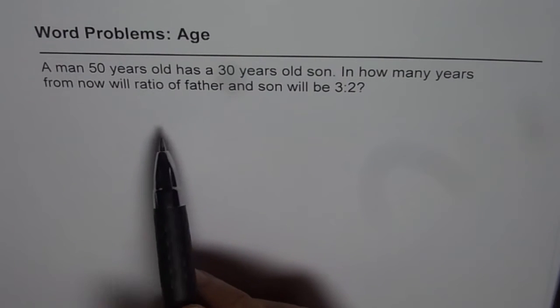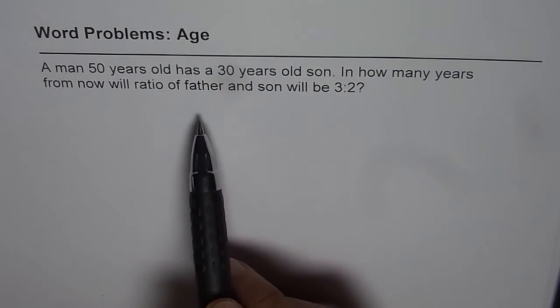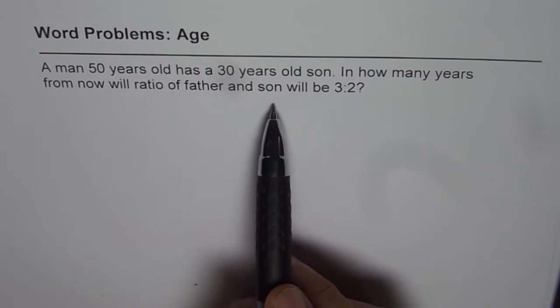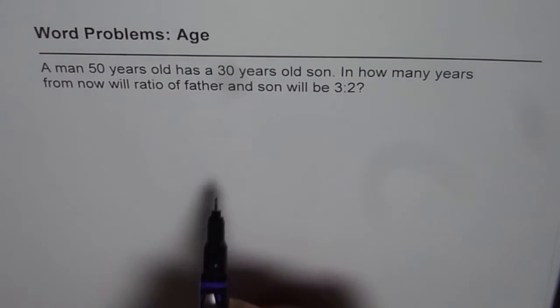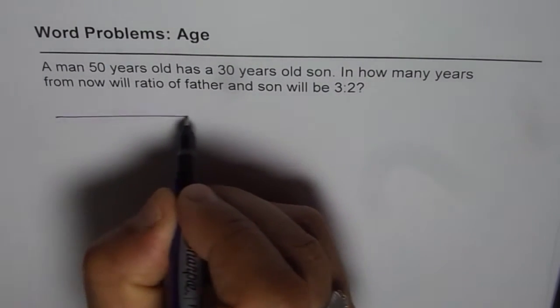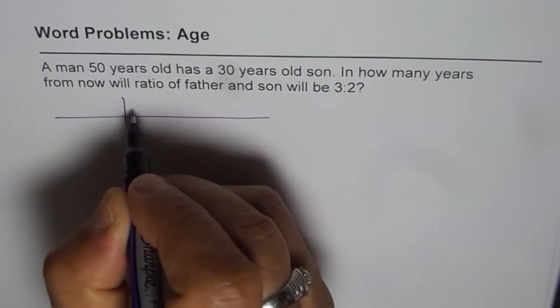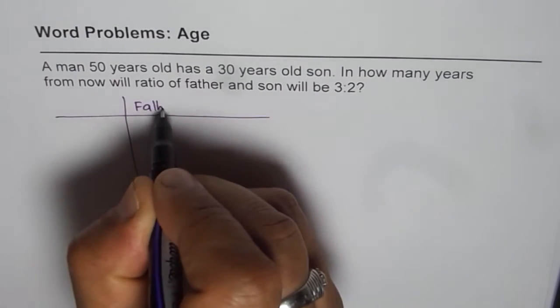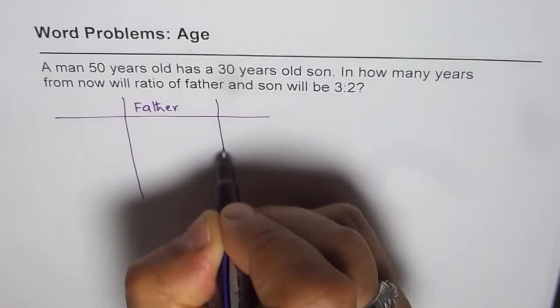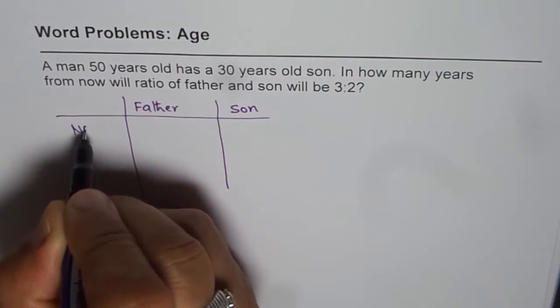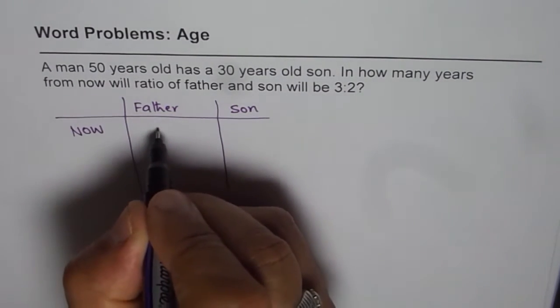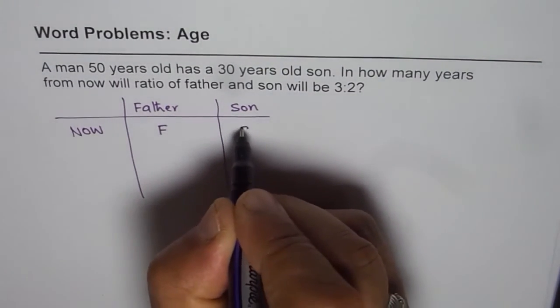In this question we are looking for the age of father and son, so we will define variables that relate to their present ages. We'll make a table with columns for father and son, and rows for present age, which is now. Let the variables be F and S.